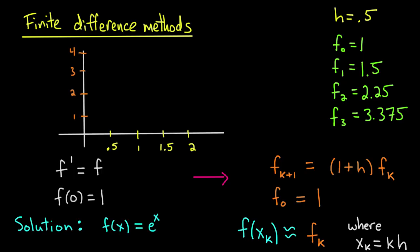Now I can plot those guys roughly on a graph. So what I've done here is I've got my x-axis and the axis which is where I'm going to plot f, and I get various values. This is f_0, which is 1, this is f_1, which is 1.5, this is f_2, which is 2.25, and this is f_3, which is 3.375.